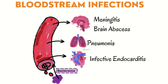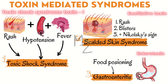Bloodstream infections: when bacteria is present in the blood this is called bacteremia. When bacteria along with blood reaches the brain, it causes meningitis — inflammation of the three protective layers of the brain called meninges — and can also cause brain abscess. If it reaches the lungs it causes pneumonia, and when it reaches the heart it causes infective endocarditis.